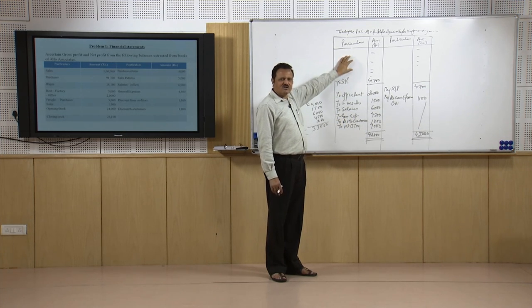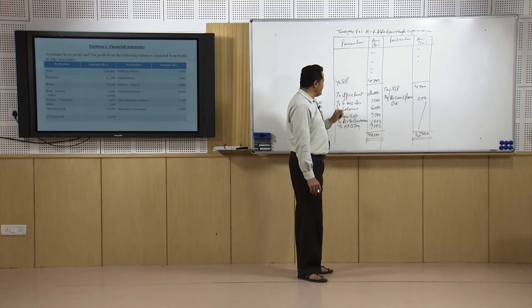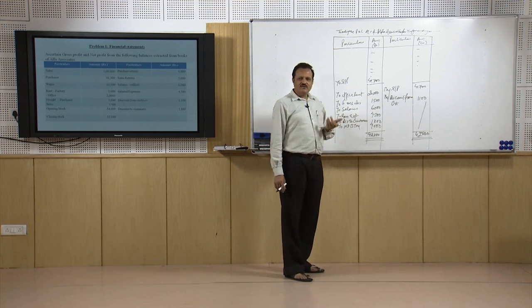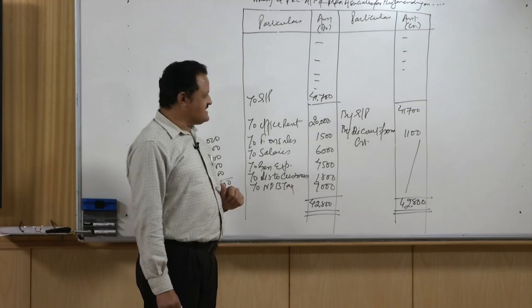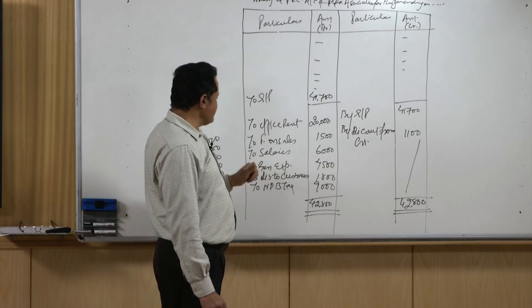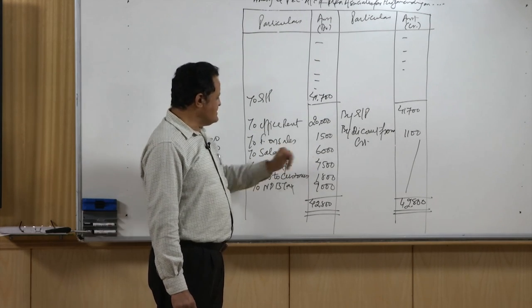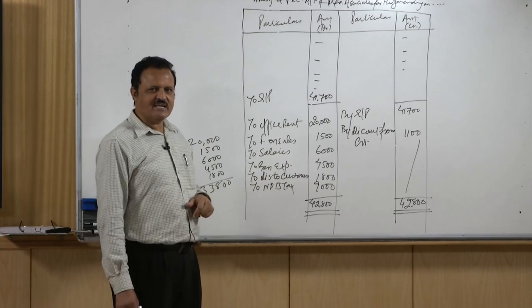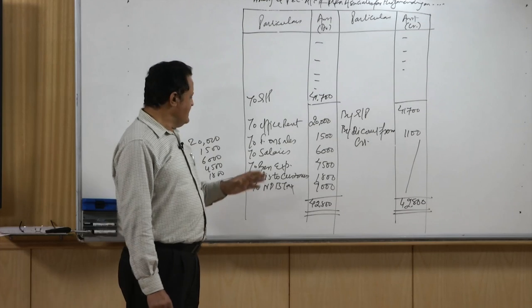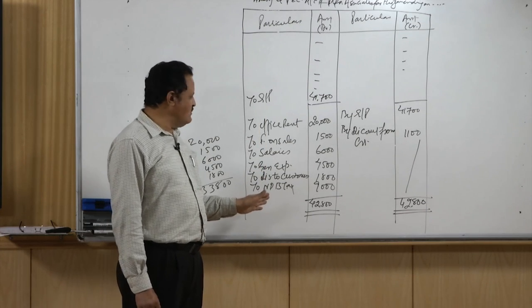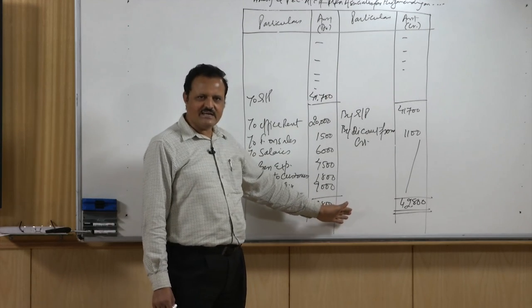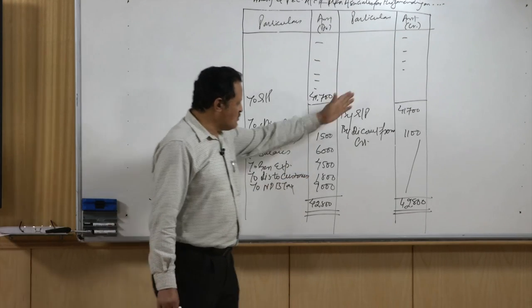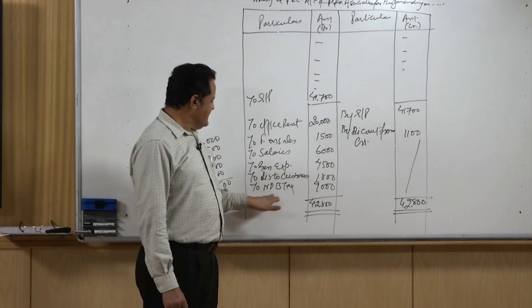Total income (direct plus indirect) minus total indirect expenses gives the net profit before tax. Discount from creditors is an indirect income — it is a discount given by suppliers. Discount given to customers is a loss and is debited. The net result — total incomes and gains minus total expenses and losses — is the net profit before tax.